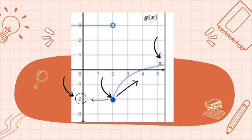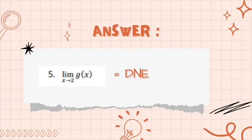We can see that the limit of g of x as x approaches 2 from the left equals negative 2, and the limit of g of x as x approaches 2 from the right equals positive 4. Because both parts of the limit are not equal to each other, the limit of g of x as x approaches 2 does not exist.